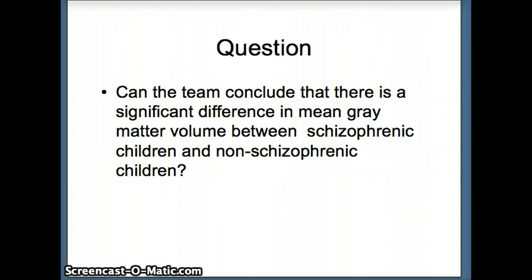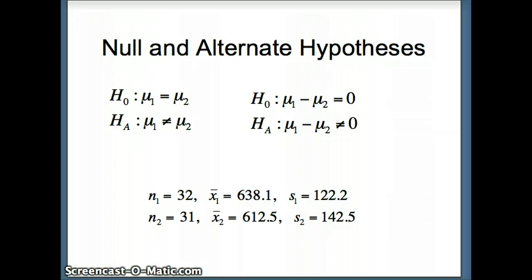We're going to ask the question: can the team conclude that there is a significant difference in mean gray matter volume between schizophrenic children and non-schizophrenic children? So here's our H0 and HA: H0 mu1 equals mu2 versus HA mu1 does not equal mu2. Subtracting mu2 from both sides, we get H0 mu1 minus mu2 is 0 versus mu1 minus mu2 doesn't equal 0. And there are the statistics that we need.